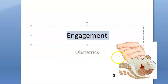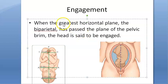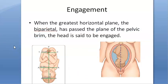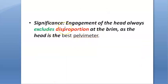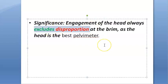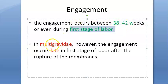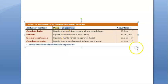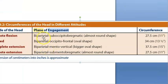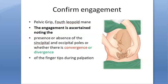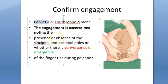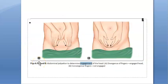Recap: Engagement means the biparietal diameter has passed the plane of the pelvic brim. It applies to both cephalic and breech presentations. In cephalic presentation, an engaged head excludes cephalopelvic disproportion. Timing: in primigravida, 38–42 weeks or during the first stage of labor; in multigravida, it occurs late — in the first stage of labor. The plane of engagement for a fully flexed cephalic presentation is biparietal plus suboccipitobregmatic, both 9.5 cm, almost a round shape. Confirmed using the fourth Leopold maneuver (pelvic grip).